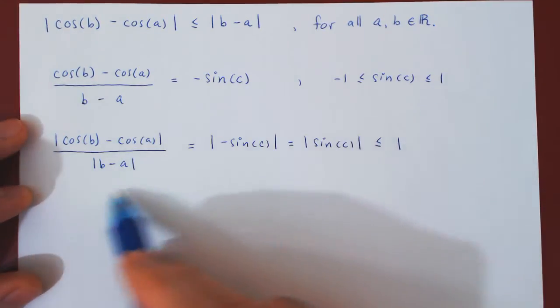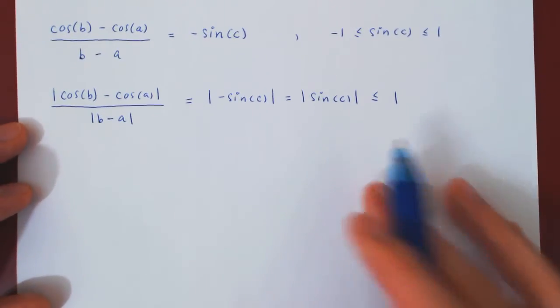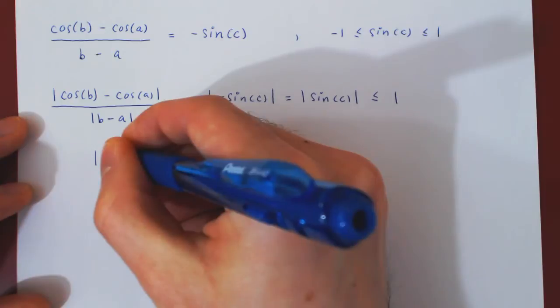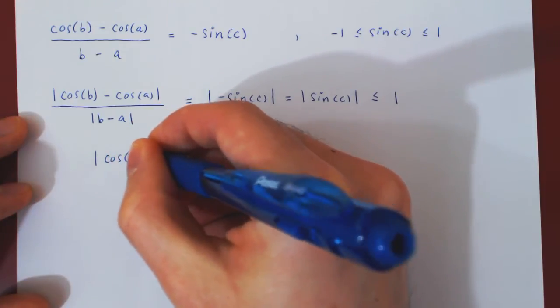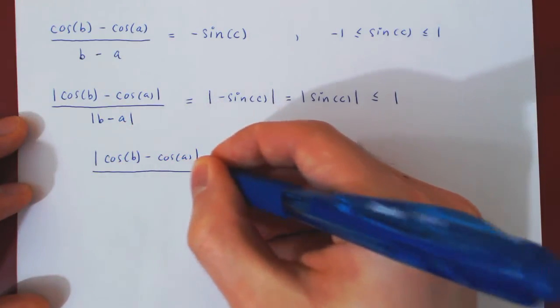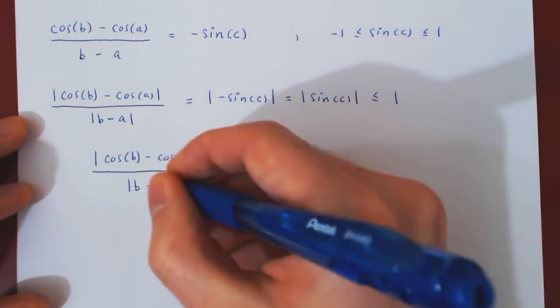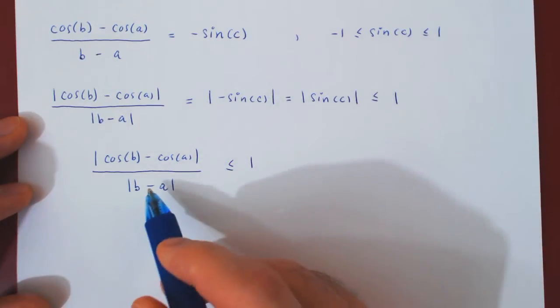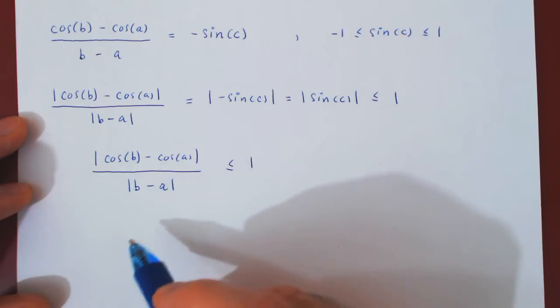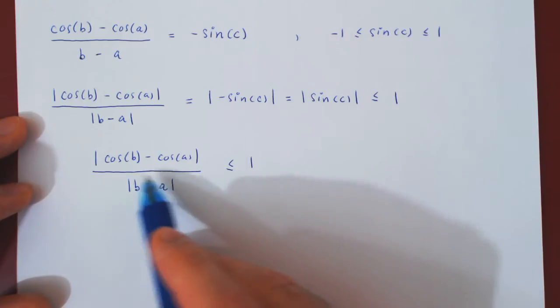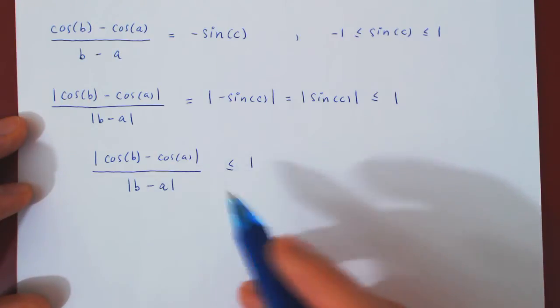So now we can look at this being at most one. As we're about to see, we're almost done. Well, now what? The absolute value of b minus a is positive, so we can multiply across it, and it being positive will preserve the direction of the inequality.